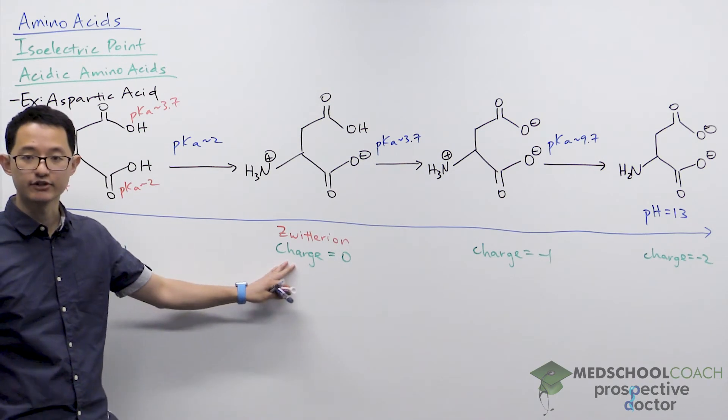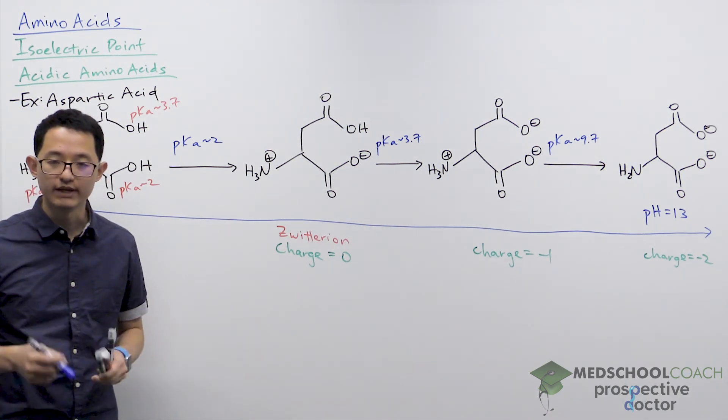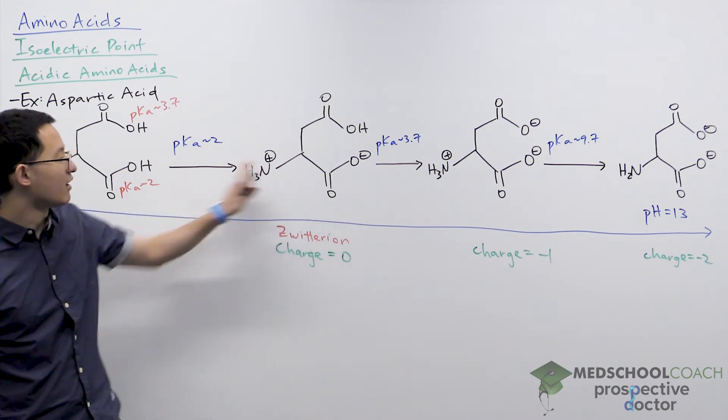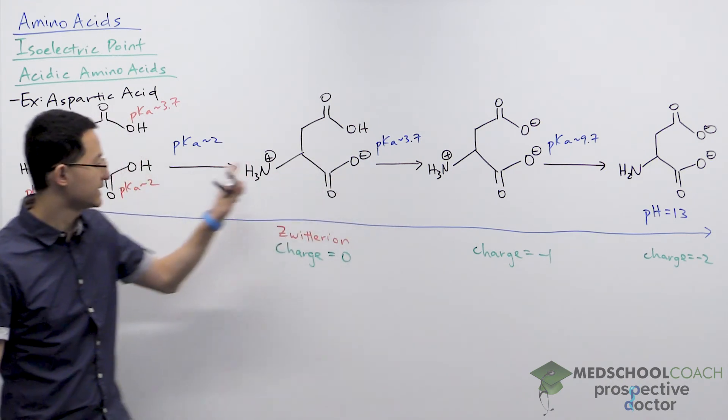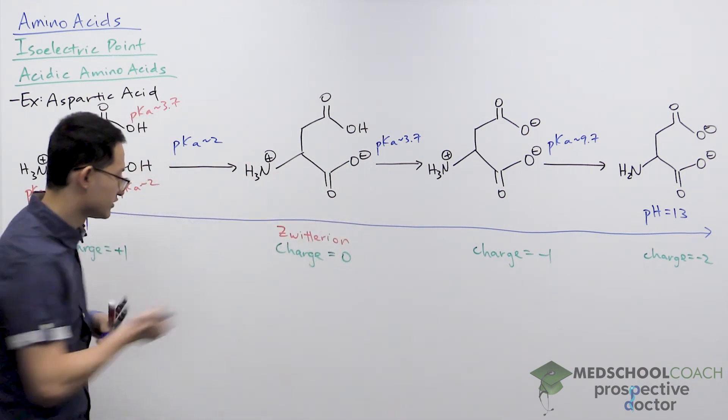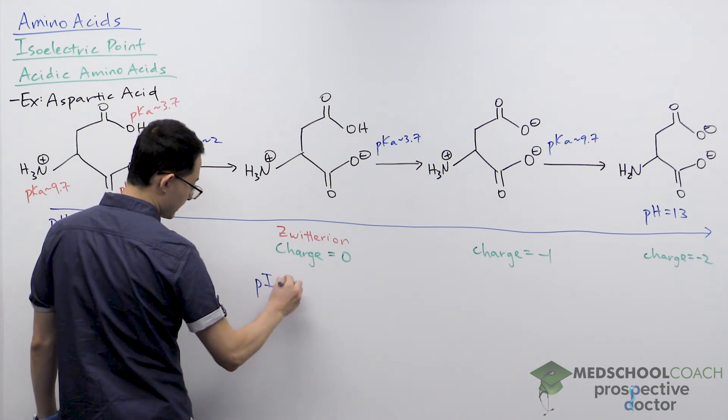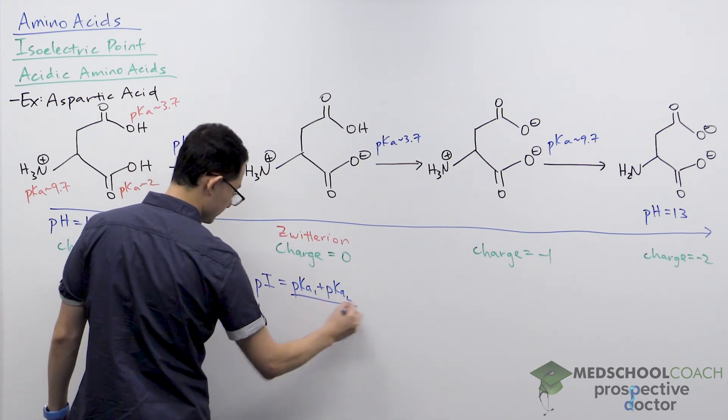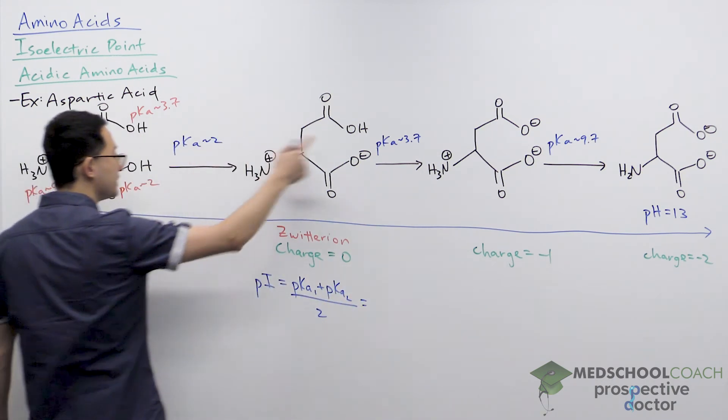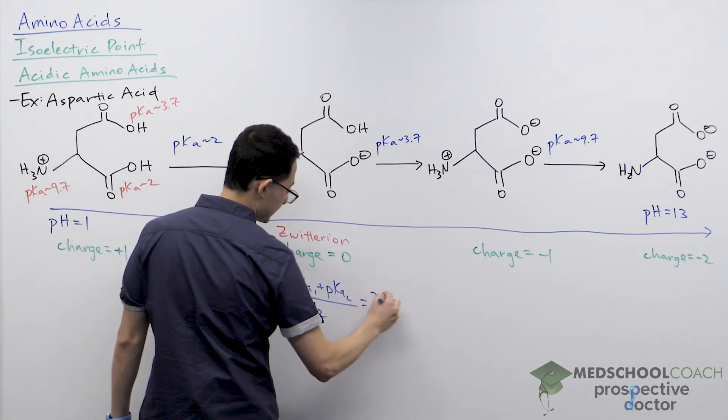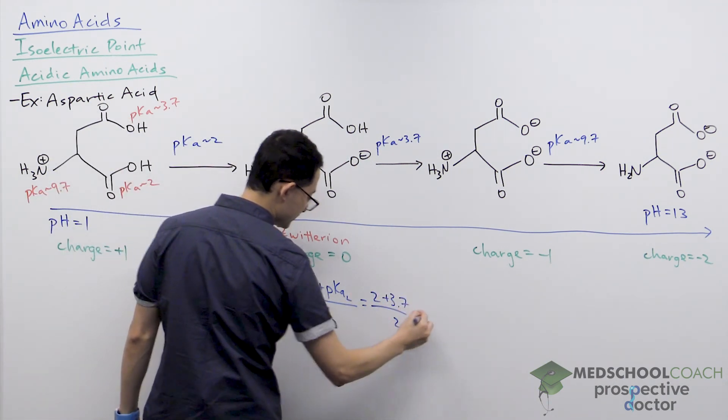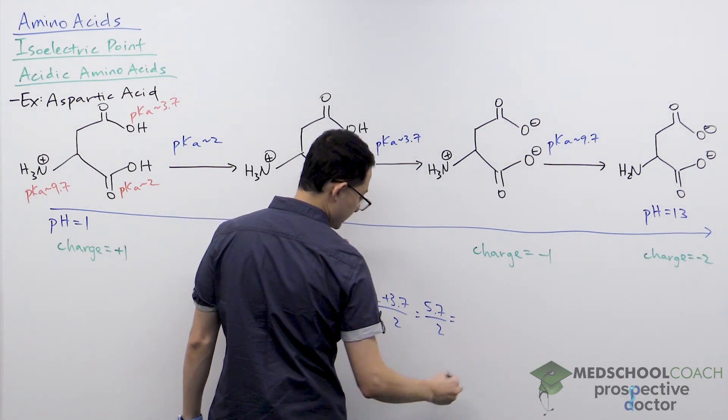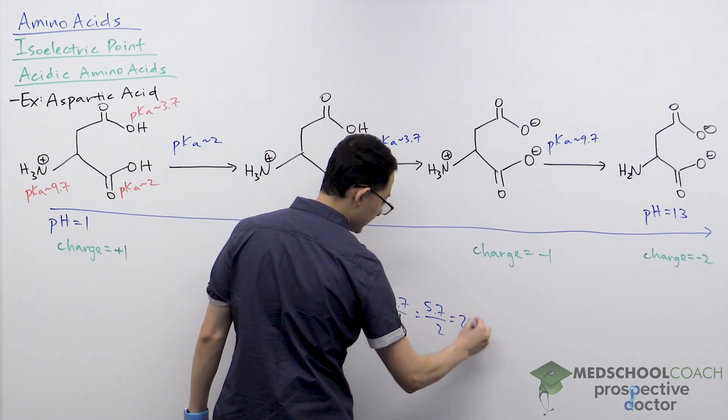So once you've identified your zwitterion, to calculate the isoelectric point, remember you want to look at the molecule and take the pKa values on both sides. In this case, 2 and 3.7 to plug into the equation for calculating the isoelectric point. pKa1 plus pKa2. So again, taking these two pKa's on either side of the zwitterion, that gives us 2 plus 3.7 over 2, which gives us 5.7 divided by 2, which is going to give us 2.85.